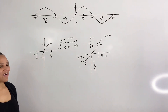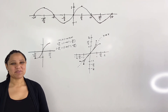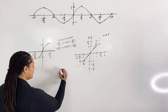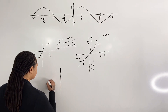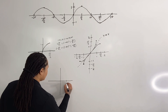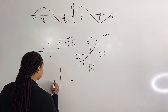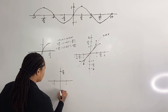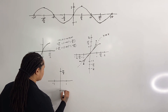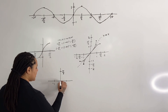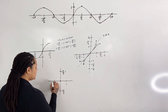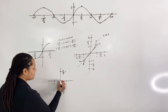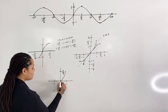Now we separate our new graph from the old one to get a clear look at the inverse sine graph. Drawing it on its own axes, we mark 1, negative 1, pi over two, and negative pi over two. The key points are (0, 0), (1, pi over two), and (negative 1, negative pi over two), and we draw the graph through those points.